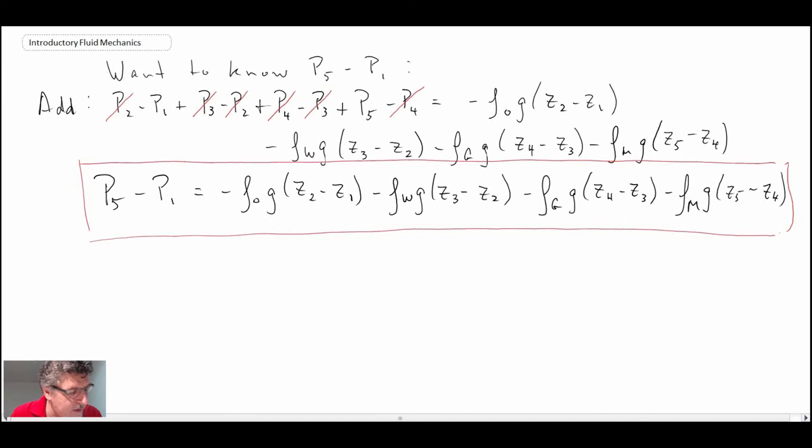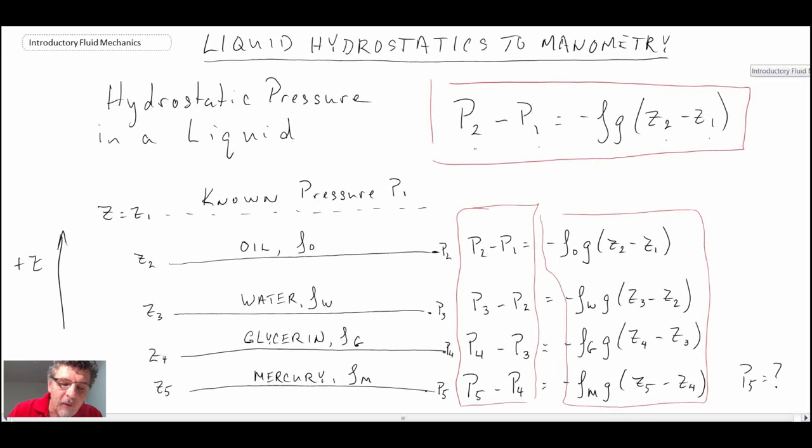However, what do we need to know? We need to know the depth of all those interfaces. What we need to know is we need to be able to measure this interface, this interface, this interface, and that interface. And know the position of them with respect to our free surface at the top. That is the principle of manometry.